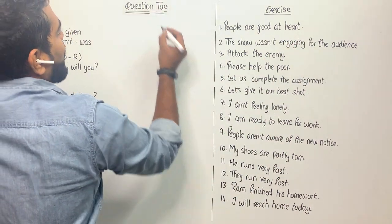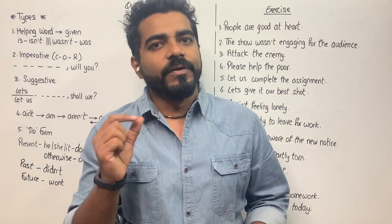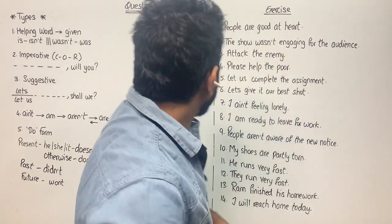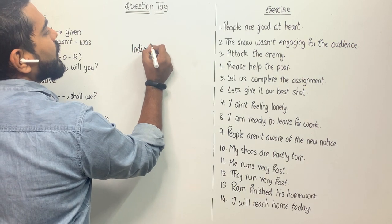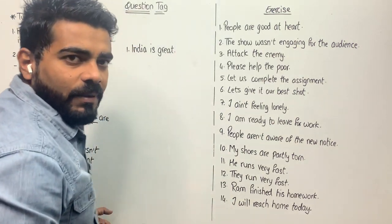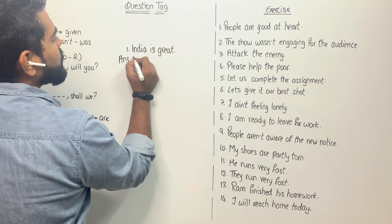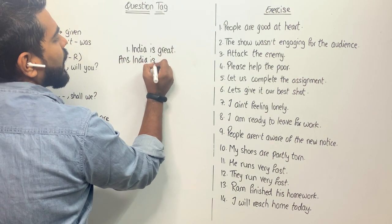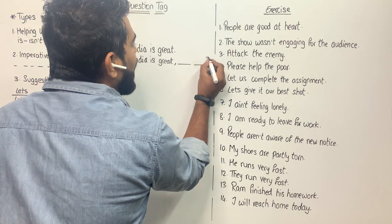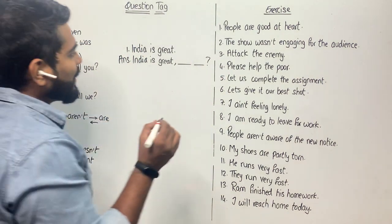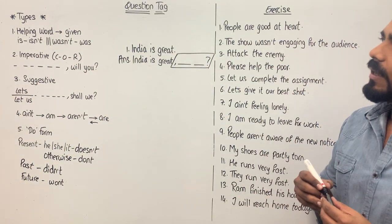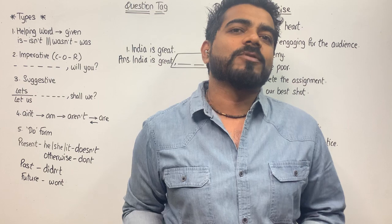So, question tag — how the question will be asked: a sentence is given to you and you will be instructed in the bracket that you have to add a question tag to it. So say for example the sentence is 'India is great.' In our answer, what we do is we first copy the whole sentence once again — 'India is great' — we add a comma and we write two words and put a question mark. So technically speaking, this part is our answer: comma, two words, and question mark. In this topic, question tag, we have a total of five types of sentences that can be asked.